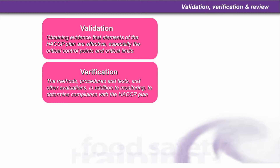The best way to remember the difference is: validation is only done as a one-off, just before HACCP starts. You validate it by checking everything is correct and everything works. Verification is an ongoing procedure — it could be done every month, for example, to make sure that the HACCP system is working. So validation is a one-off done right at the beginning; verification is ongoing.